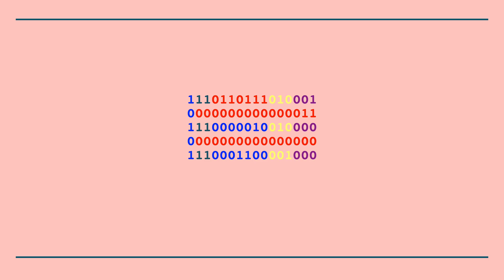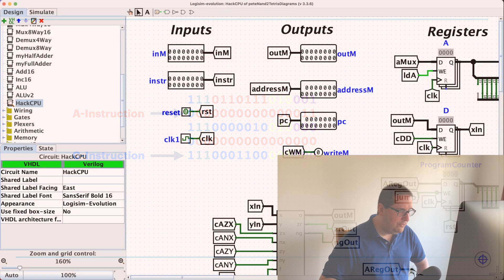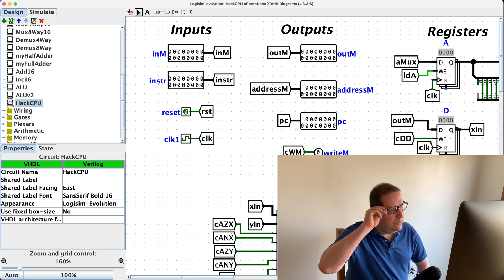In the HACK CPU, if an instruction starts with a zero it's an A instruction; if it starts with a one it's a C instruction. So the leftmost bit — a bit being a piece of information — being zero is a code for the concept that the next 15 bits are the data to be put into the A register. If the leftmost bit is a one, it's code that the next few bits are a C instruction. But the key thing I want to get across here is that the computer doesn't know this. We know it.